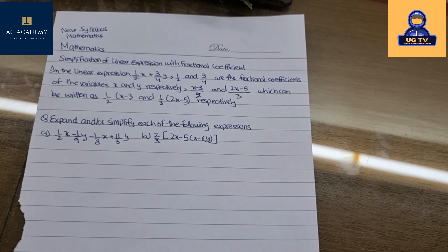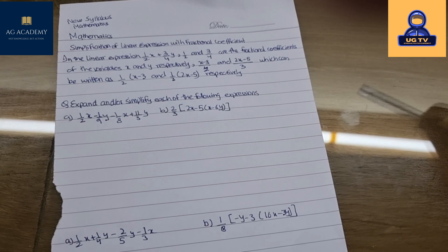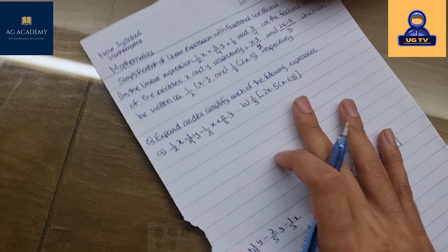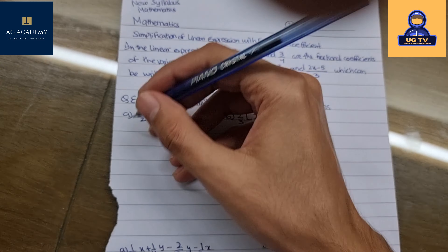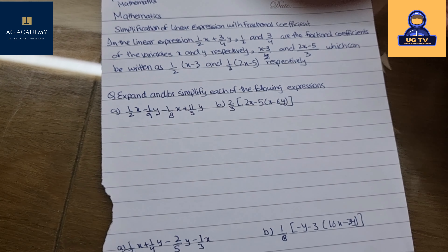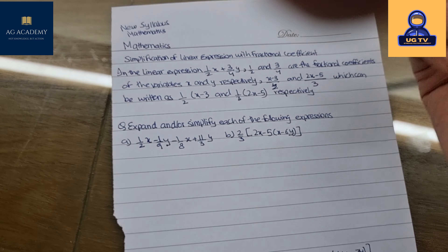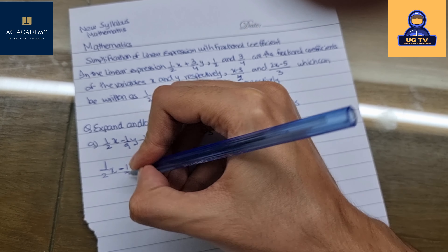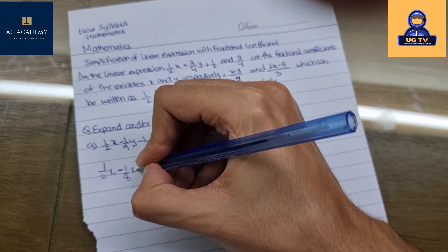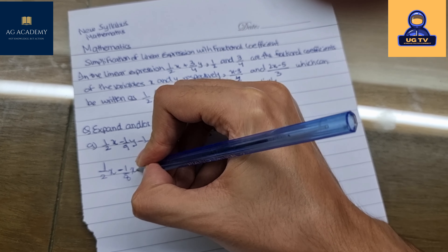The task is to expand and simplify each of the following expressions. Whenever you see this kind of question, it is always good to put all the x values together and then put all the y values together. So we're going to expand and simplify these questions. Let's put all the x values together first, and then we'll put all the y values together — for example, one-over-nine y plus eleven-over-three.